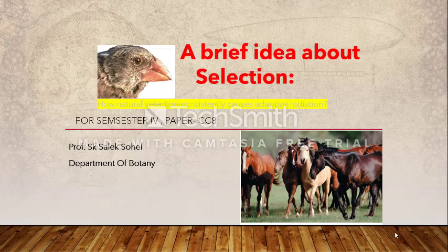Today's topic is headed as a brief idea about selection. In the last lecture we covered the theories of evolution, where we saw that natural selection is a driving force of the wheel of evolution. In today's lecture, we will look forward to assert how natural selection consistently causes adaptive radiation — a process in which organisms diversify rapidly from an ancestral species into a multitude of new species.